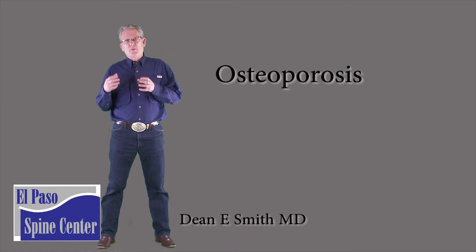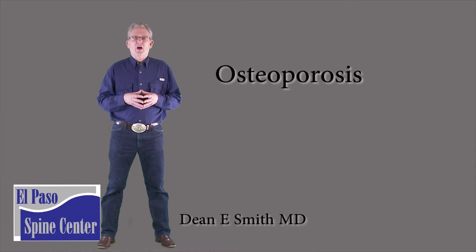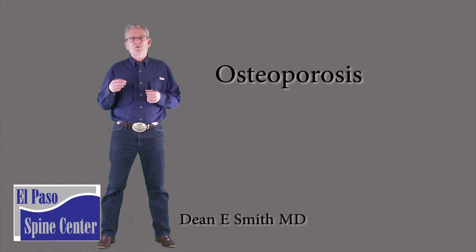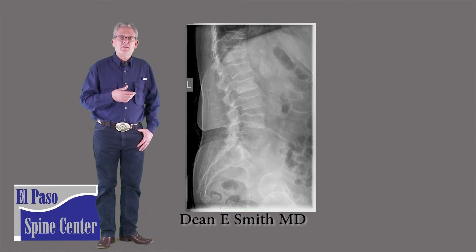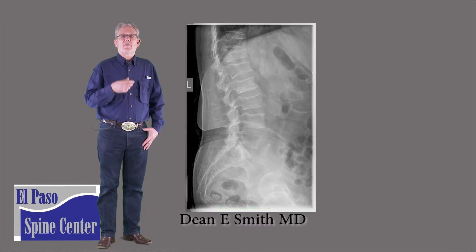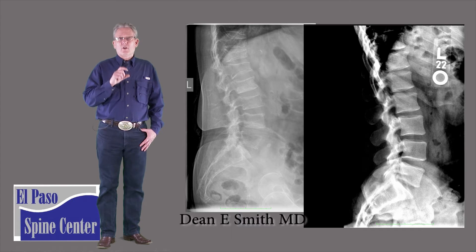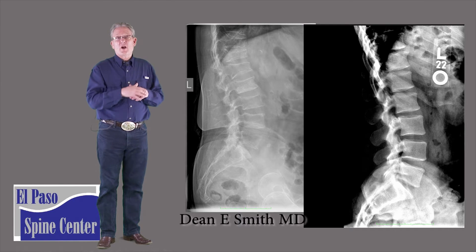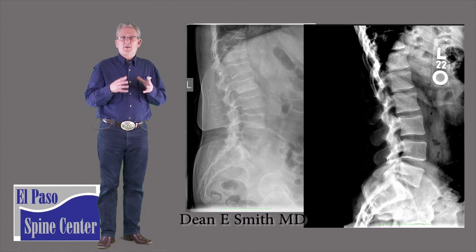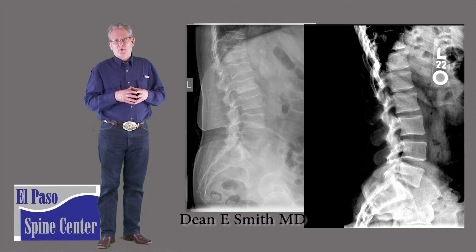As we age, our bones can lose calcium. Too much loss of calcium is called osteoporosis and the bones become very weak. These bones can fracture or collapse under even very minor trauma. Here you see an x-ray of the lumbar spine, seen from the side. Typically, these bones all look like boxes, but in the case of a fracture, they're going to collapse or smash down and may look like a triangle.